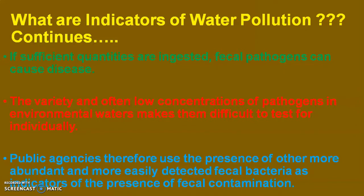If sufficient quantities are ingested, fecal pathogens can cause diseases in human beings. However, the variety and low concentration of pathogens in environmental waters makes it difficult to test for them individually. Therefore, public agencies use the presence of more abundant and more easily detectable fecal bacteria as indicators for the presence of fecal contamination. The presence of these indicator bacteria indicates the presence of fecal contamination and therefore the possible presence of pathogenic microorganisms in the water.